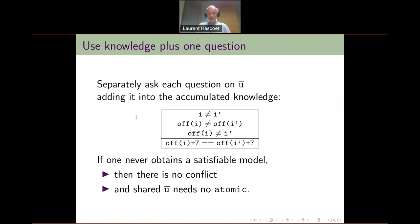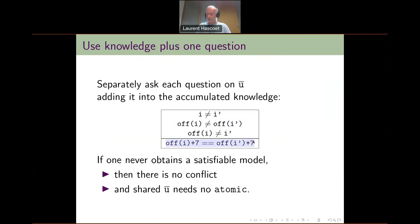These are the questions we need to ask, and we ask each one separately by adding it into the accumulated knowledge base of a theorem prover. This is the original knowledge extracted from the primal code. If we add to it the assertion that two indices are equal — which would mean there is a conflict — we ask the theorem prover whether this new model is satisfiable. If we are lucky and the model is unsatisfiable, this proves that the conflict does not occur. And if for any question concerning u-bar we can show there is no conflict, then all accesses to u-bar do not need to be atomic.